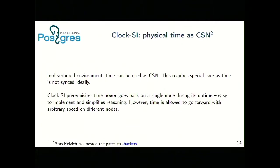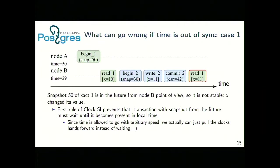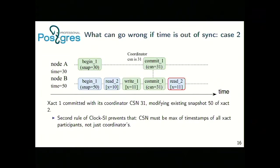Since time is not perfectly synchronized, we need some extra rules. The first rule says that if one node receives a transaction with a snapshot from the future, it must wait until it reaches that moment, so we don't lose any actions that already happened. The second rule is to choose the maximum timestamp among all nodes if they are non-synchronized, so you have a reliable commit and will never get non-repeatable read semantics — you'll always have real snapshot isolation.